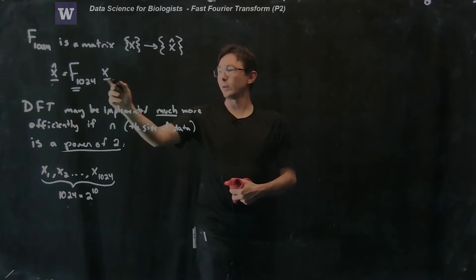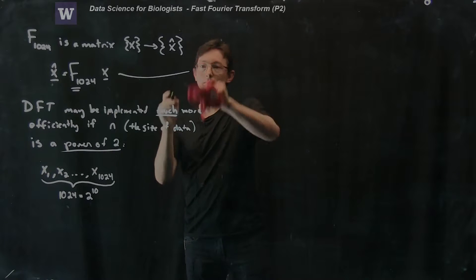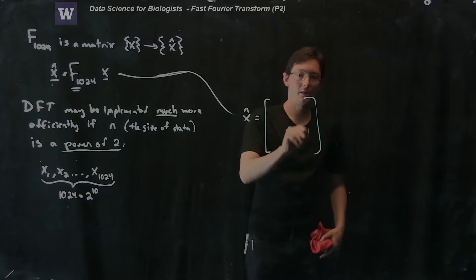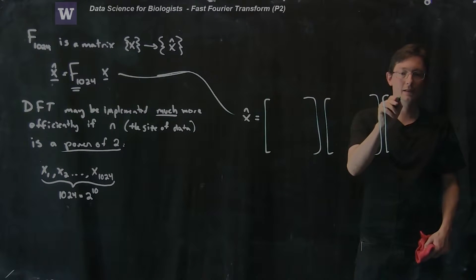What we can really rewrite this as is we can say that X hat is really equal to some matrix times another matrix times X.